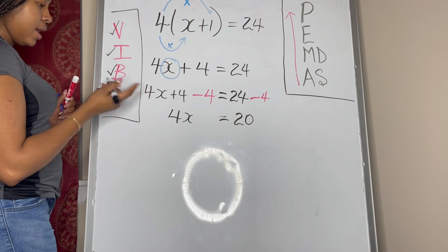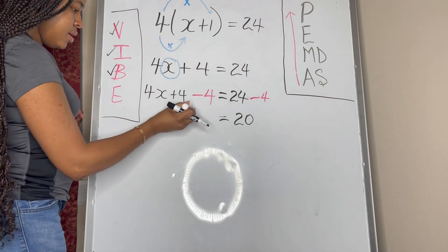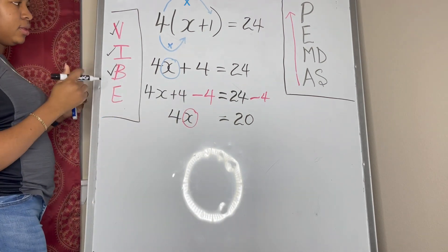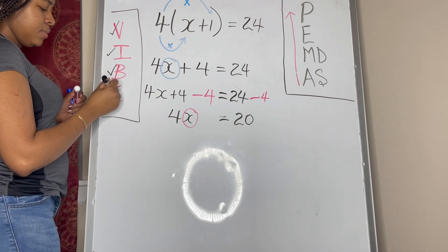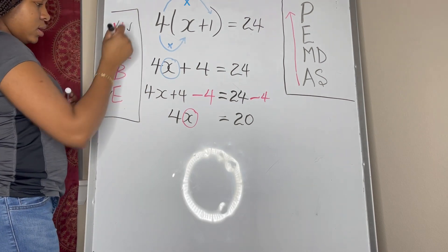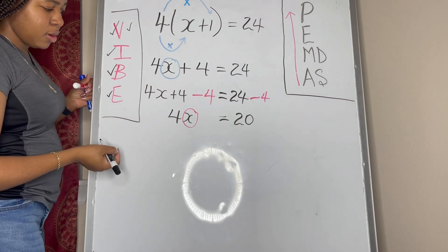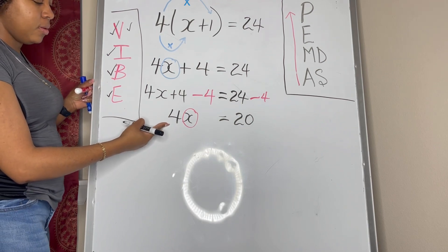Okay, and then here we look, we're not done because our variable is not by itself. So we need to go another round of VIBE. So we found our variable, good. We need to perform inverse operation to further isolate our variable.